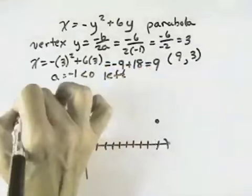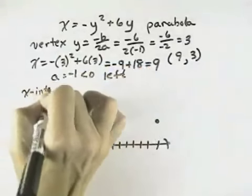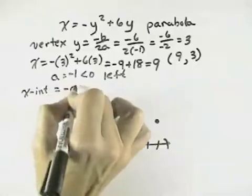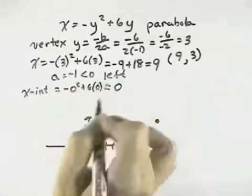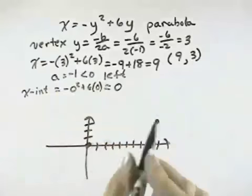And then we can get some intercepts. The x-intercept is when y equals 0, which would be negative 0 squared plus 6 times 0, or 0. So we have an x-intercept at 0.